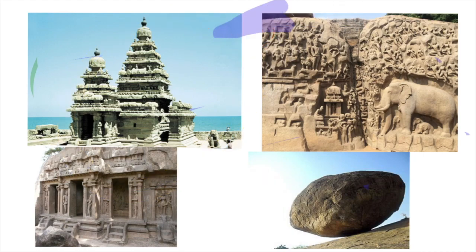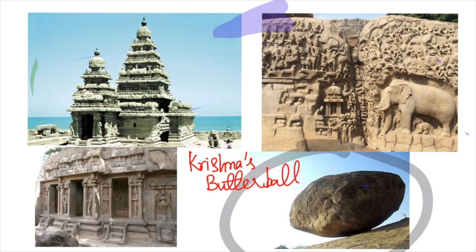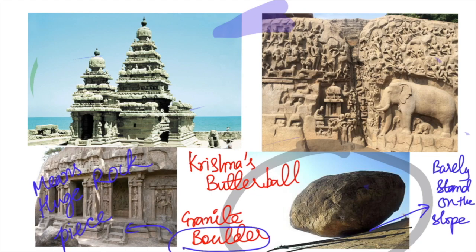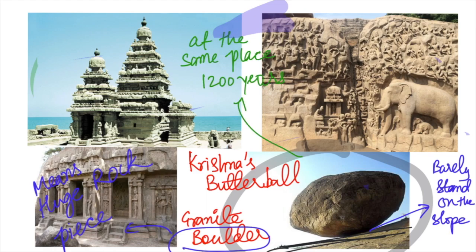The last important architectural feature at Mahabalipuram is Krishna's Butter Ball — a massive granite boulder that appears to be floating or barely standing on a slope. It is said to have been in the same place for more than 1,200 years.